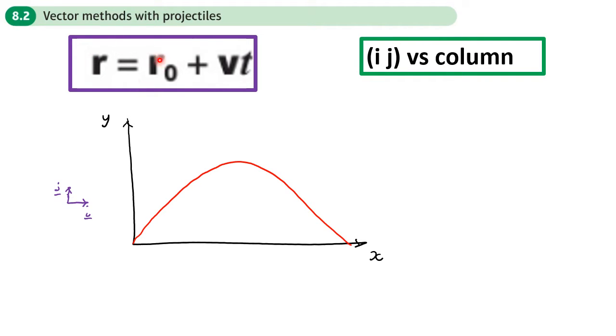Remember what we said before: initial position plus displacement gives you final position. This is where there is no acceleration, so that's ideal for the horizontal component of the projectile because that moves with constant velocity. The only thing we're adding here is gravity.